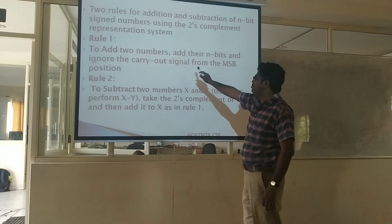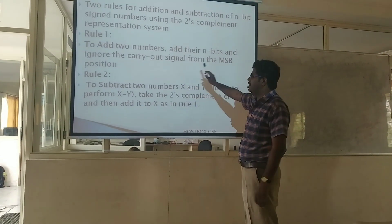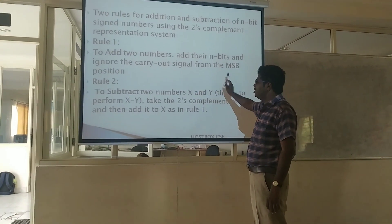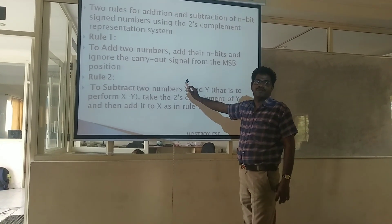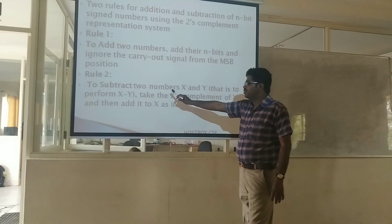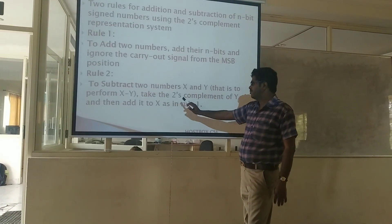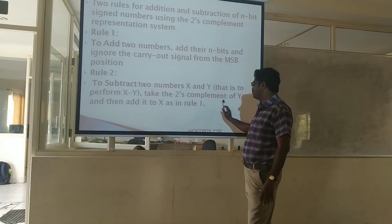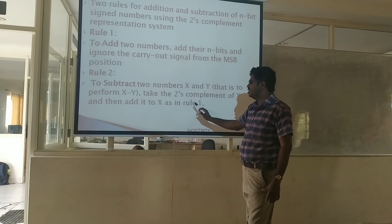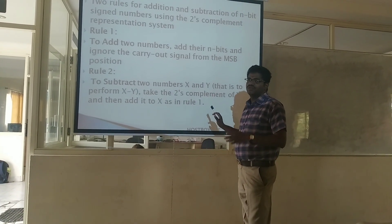Rule number 1 is that to add two numbers, add the n-bits and ignore the carry-out signal from the MSB position, that is most significant bit. Then Rule number 2: to subtract two numbers x and y, that is to perform x minus y, you have to take the 2's complement of y and then add it to x as in Rule number 1.